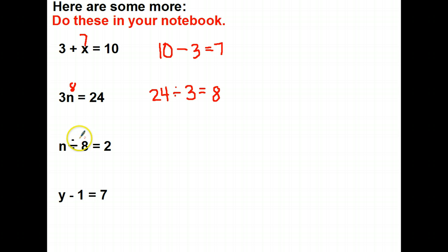Here we're dividing, so we'll need to multiply. We'll take 2, a quotient, times 8. 2 times 8 is 16. Plug it in. Is 16 divided by 8 2? Yes, it is, so that's correct.